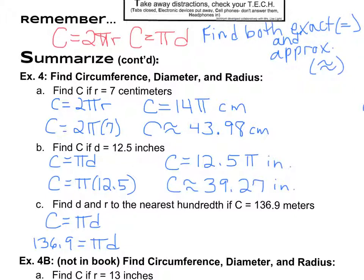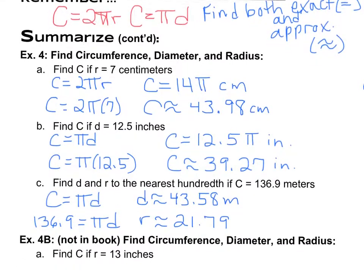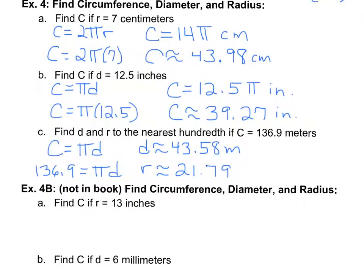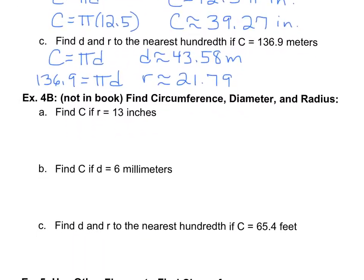That should give you 43.58, and that's meters for the diameter. What do I do to go from diameter to radius? Remember, I simply cut it in half, and so half of the diameter there is 21.79. That's what we have for our first set of examples for finding circumference and diameter and radius.